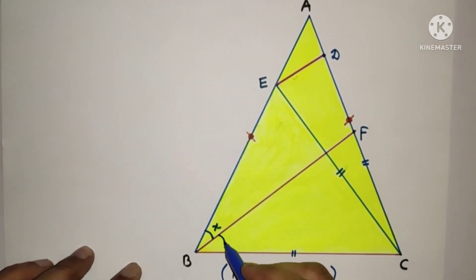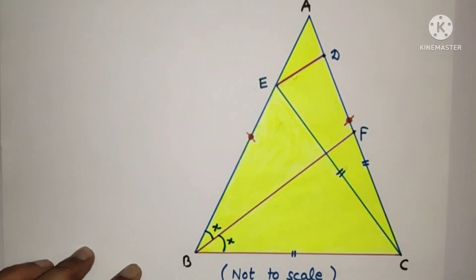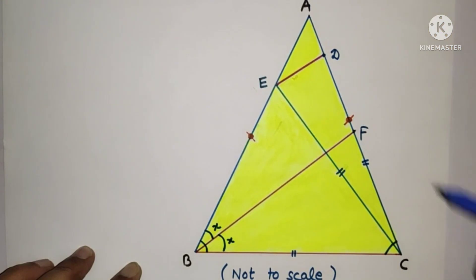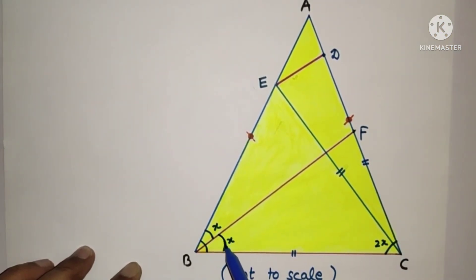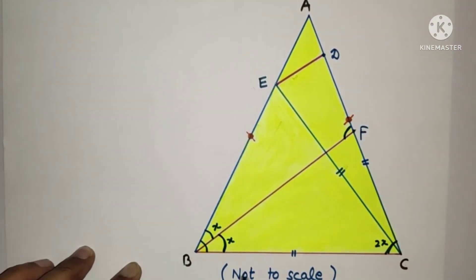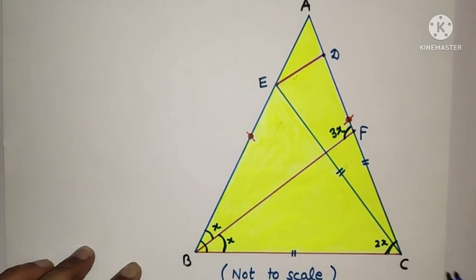Since BF bisects angle ABC, let us suppose each half is x, so both halves are x. Since AB equals AC, the base angles are equal, and angle ACB is 2x. This angle at C is an exterior angle equal to the sum of the two remote interior angles, which is x plus 2x equals 3x.